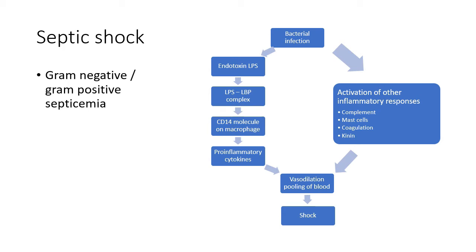The third type is septic shock. The cause is slightly different — it is due to severe bacterial infection or septicemia, more commonly gram-negative but also gram-positive. The lysis of infecting bacteria releases endotoxin, which is a lipopolysaccharide. This LPS enters circulation and binds with lipopolysaccharide binding protein. The LPS-LBP complex then attaches to the CD14 molecule on the surface of monocytes and macrophages.